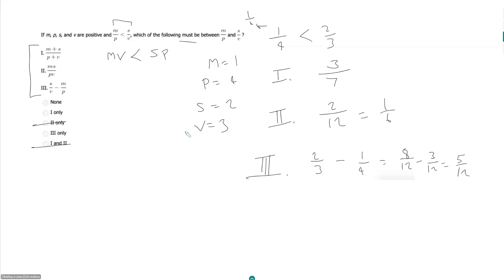Because I can subtract m over p from each side, and this is telling me that s over v minus m over p is just going to be greater than 0. So this is the only thing that has to be true about s over v minus m over p. I am thinking that is telling me it doesn't necessarily have to be between m over p and s over v. It's just got to be greater than 0.